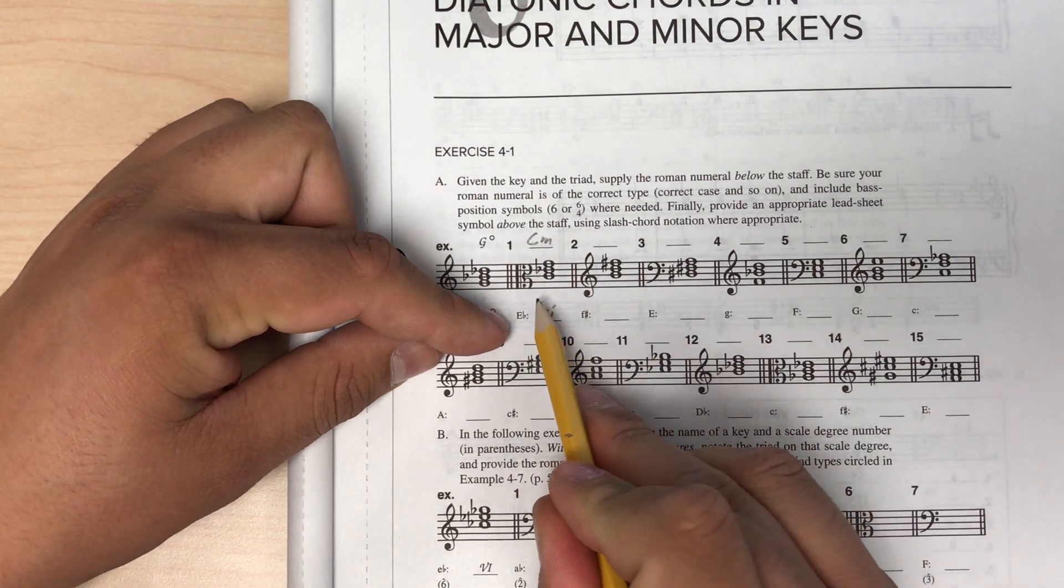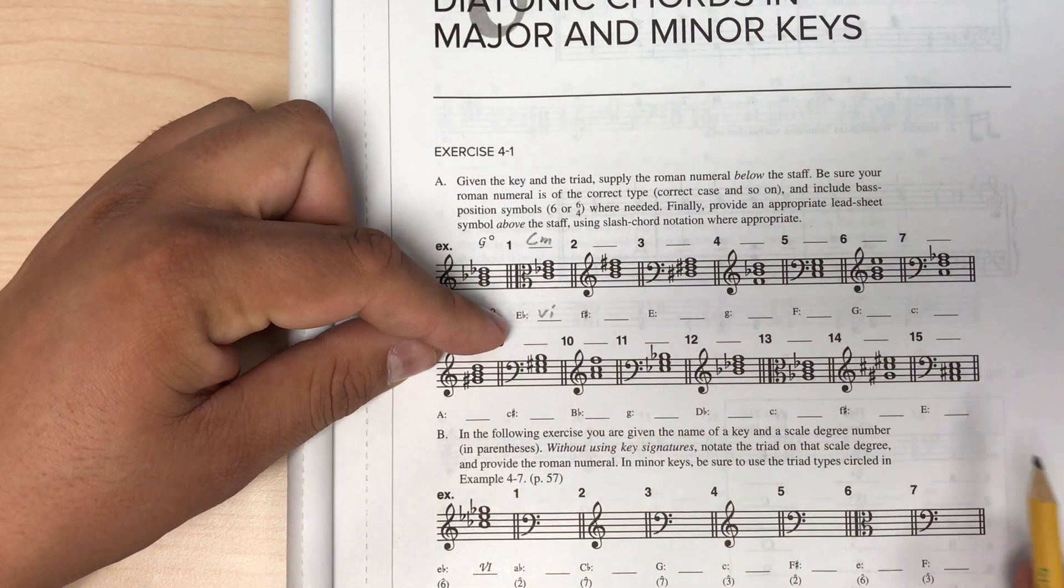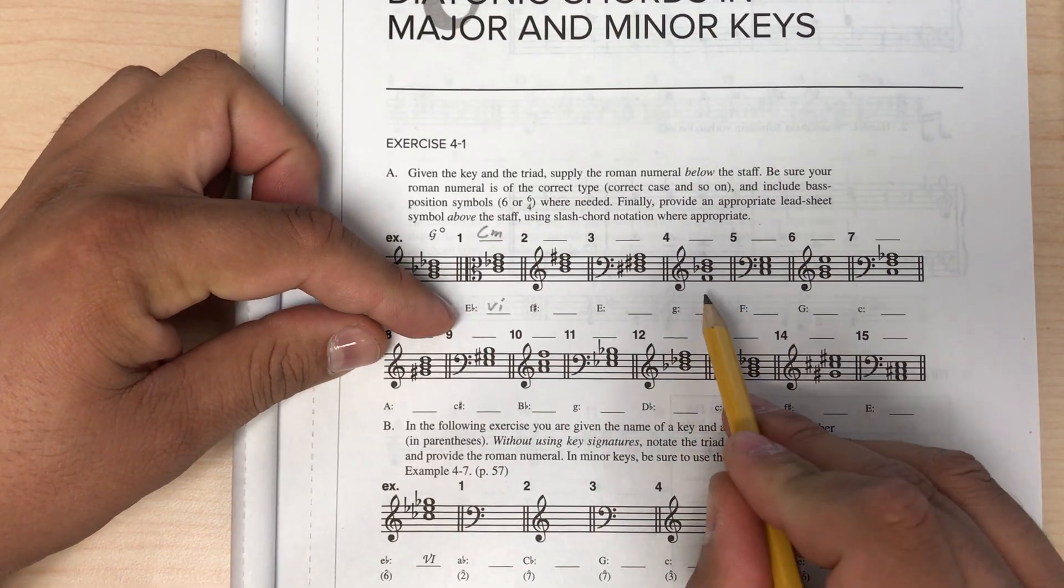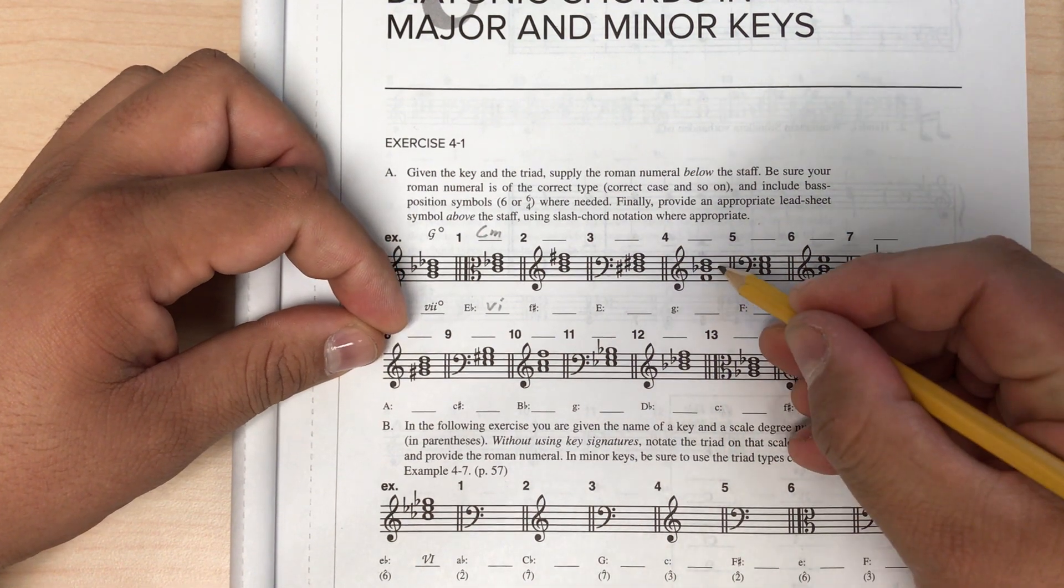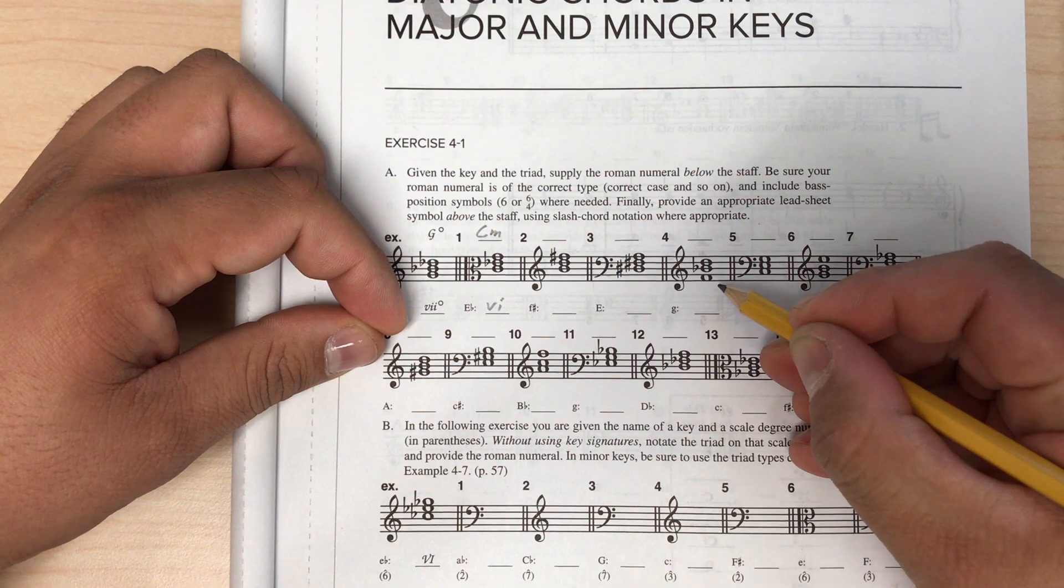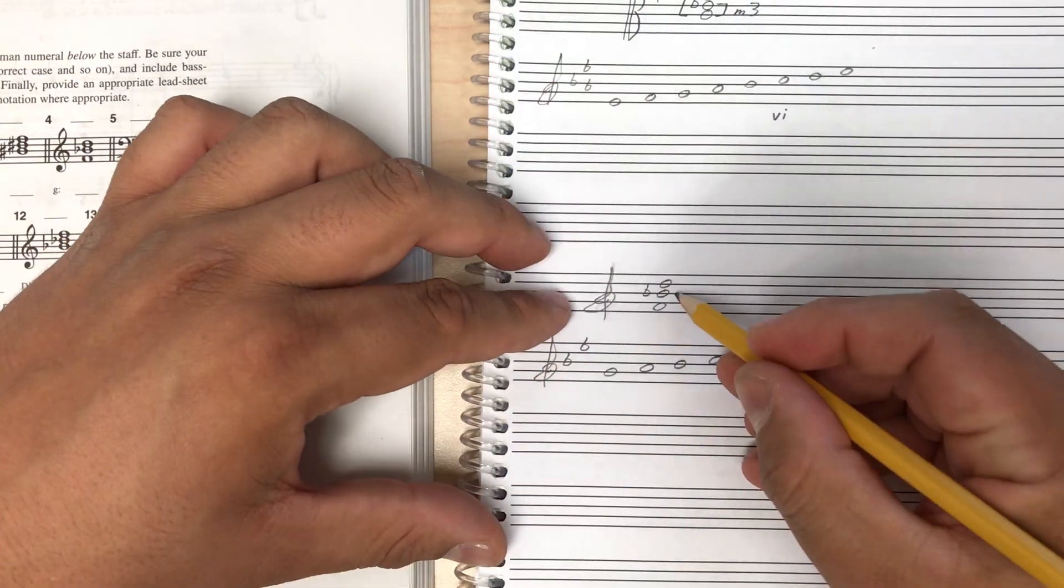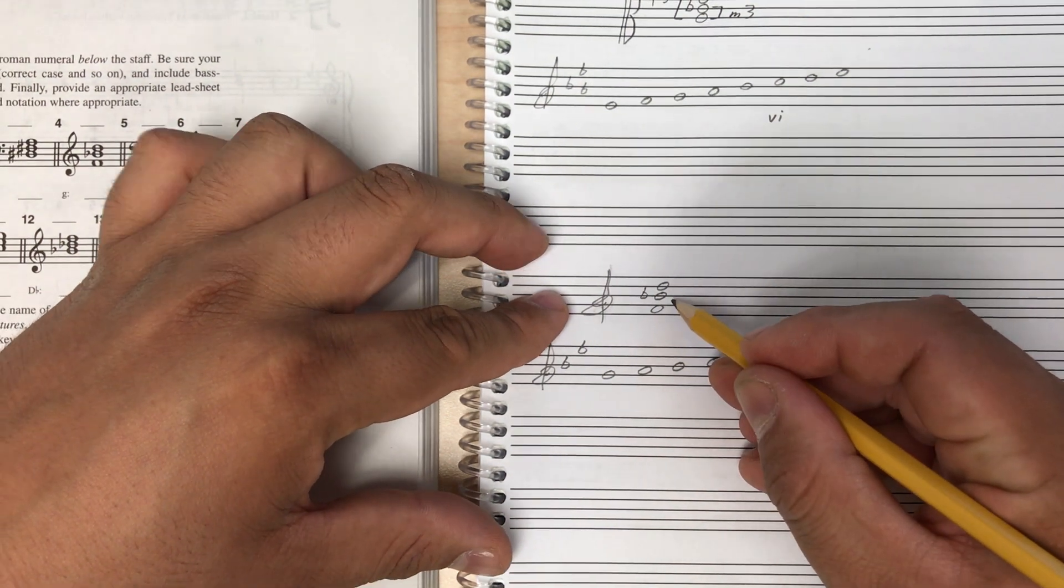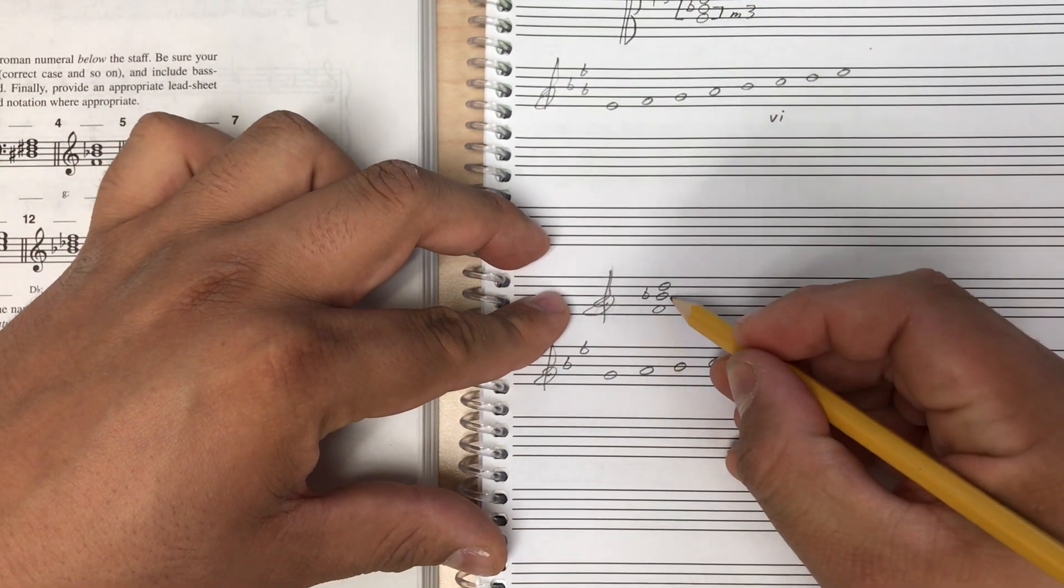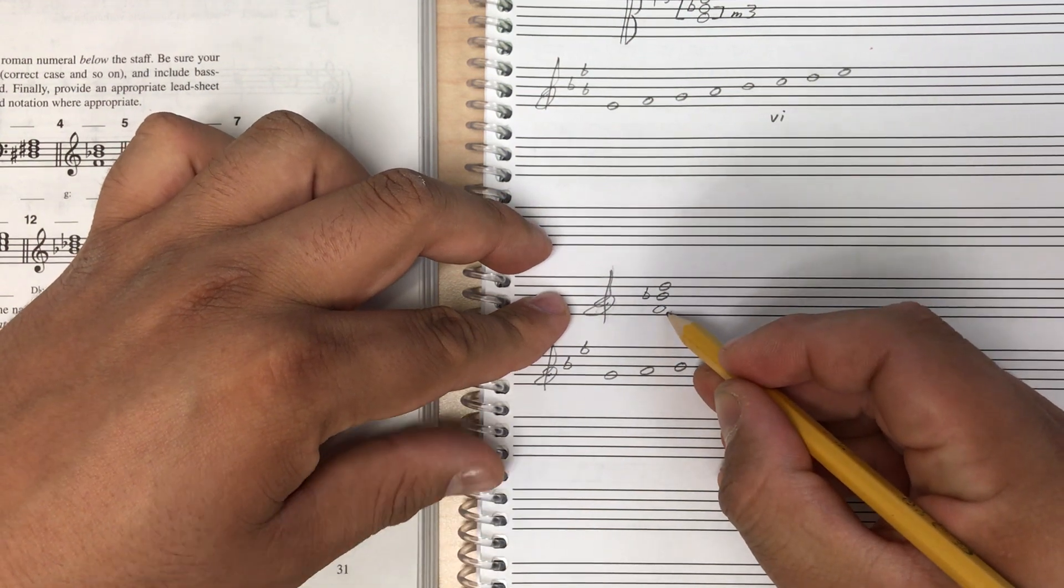Some of these will not be in root position. Like if we scan ahead a little bit, if we look at, for example, number four here, number four we can see is not in root position. So we have one extra step. So here I've copied it over. We can tell this is not in root position because it's not stacked in thirds. It's not a nice neat snowman. We have a mix of notes that are on lines and one note that is on a space.